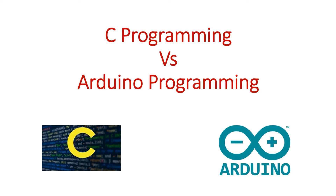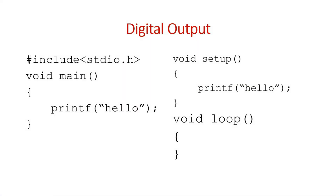In this session we are going to see what are the differences between the conventional C programming that you might have launched on computers and what is Arduino programming and where does it stand. If you have done any C programming or even remotely know about C coding, you must be familiar with this structure where we hash include a library like stdio.h, then write the program in the body void main, and whatever is the executable code goes inside those two curly brackets. Whereas in Arduino we don't do it like this.